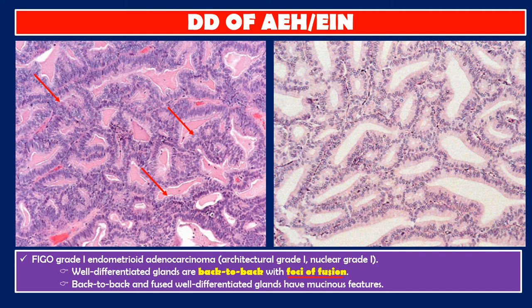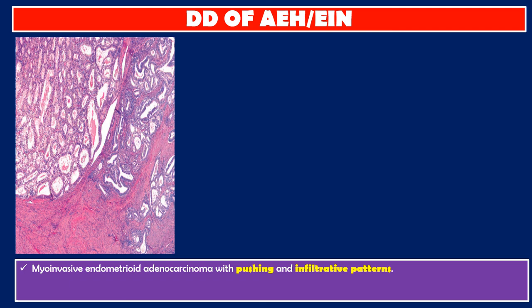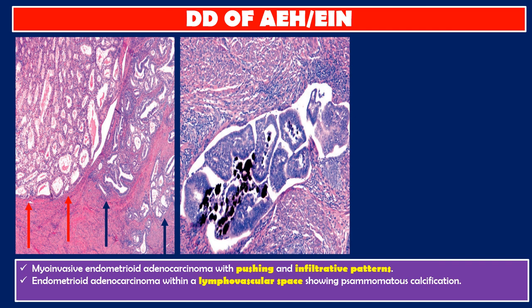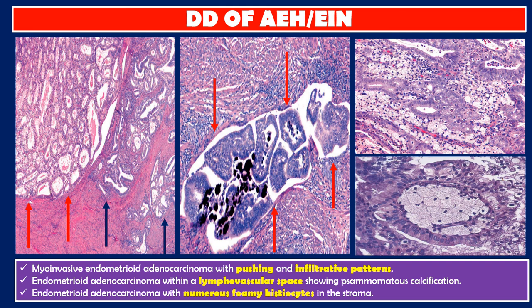In this photo, we see myoinvasive endometrioid adenocarcinoma with pushing and infiltrative patterns. Here we see endometrioid adenocarcinoma within a lymphovascular space showing psammomatous calcification. Here we see endometrioid adenocarcinoma with numerous foamy histiocytes in the stroma.